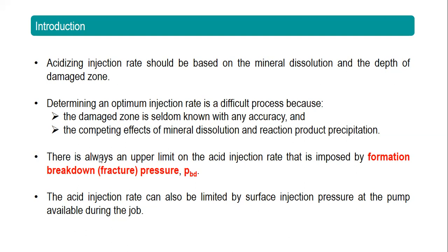For injection rate determination, we need to know there is always an upper limit on the acid injection rate, imposed by the formation breakdown pressure or formation fracture pressure. This is the pressure at which fractures will propagate due to injection. If you increase your injection pressure above this breakdown pressure, the fracture will grow and propagate — and we don't want that. The injection rate can also be limited by the surface injection pressure available at the pump during the job.